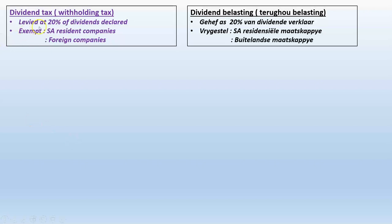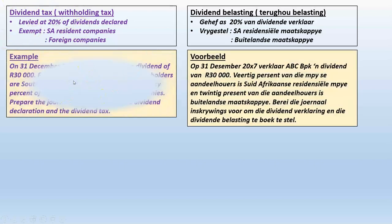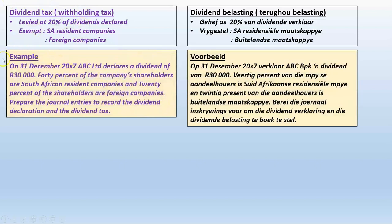South African resident companies and foreign companies are exempt from the 20 percent withholding tax. For foreign companies there is technically a formula to apply, but it is approximately 20 percent. For our purposes this year, we will assume foreign companies are also totally exempt from dividend withholding tax.